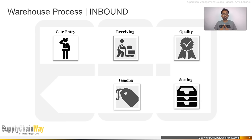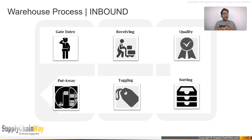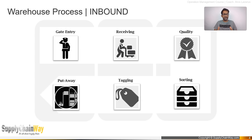If your WMS has slotting ability, you can tag the product, put it in the location, scan it, and the system automatically updates the product's location. Without that capability, you put the product in the location first and then update the system manually. After sorting and tagging, the next step is put away — moving the product from the staging area into the right shelf in the warehouse. At this point, the inbound process is complete and the product is in the organization's inventory.